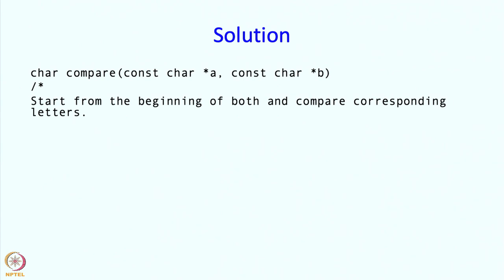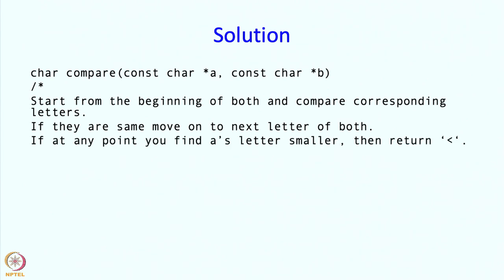What is this supposed to do? We will start from the beginning of both and compare corresponding letters. If they are the same then so far the two strings look equal. You do not know which one will be stored before in the dictionary and which one will be stored later. So you have to move on to the next letter of both. If at any point you find that A's letter is smaller than letter of B, that means that A will be stored before in the dictionary order and so you can immediately return less than. Likewise, if you find that B's letter is smaller then you can immediately return greater than.